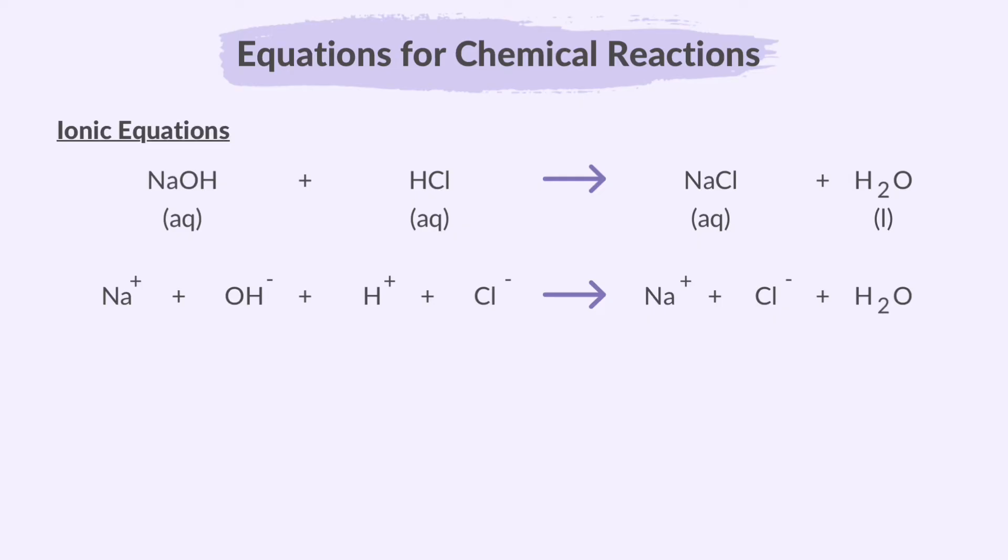So that gives Na plus, plus OH minus, plus H plus, plus Cl minus, to give Na plus, plus Cl minus, and H2O. Cancel out the ions that are the same on either side. Then we are left with this ionic equation: H plus, plus OH minus, to give H2O.